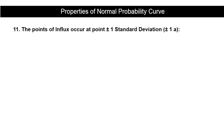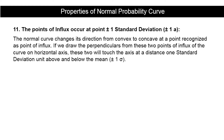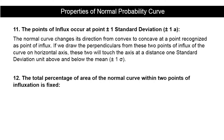The eleventh property is that the points of influx occur at plus and minus one standard deviation. The normal curve changes its direction from convex to concave at points recognized as points of influx. If we draw perpendiculars from these two points of influx onto the horizontal axis, they touch the axis at a distance of one standard deviation unit above and below the mean.